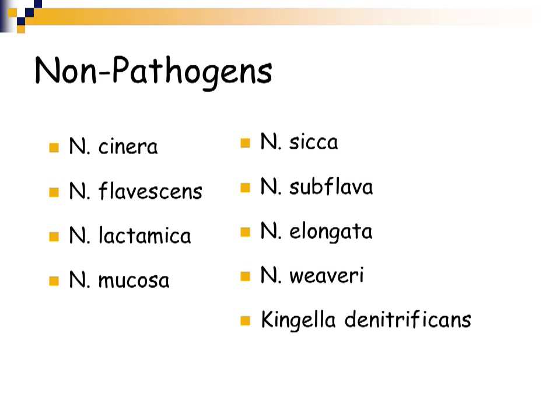There are some other organisms in the Gram-negative cocci group that are not considered pathogenic, so we won't focus on them, but I will mention them: Neisseria cinerea, Neisseria fluorescens, Neisseria lactamica, Neisseria mucosa, Neisseria sicca, Neisseria subflava, Neisseria elongata, and Neisseria weaveri. There's also Kingella denitrificans. We will discuss Kingella as well as Acinetobacter in another lecture because they are actually small rods and not necessarily cocci. We're going to focus on the Gram-negative cocci in this lecture.